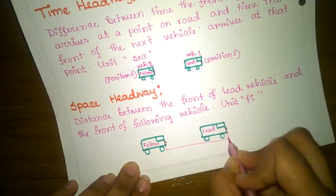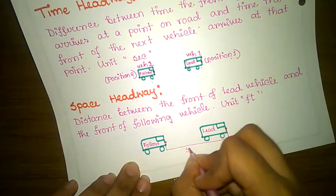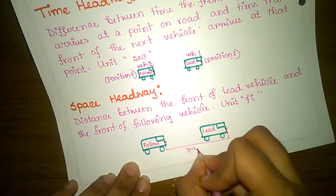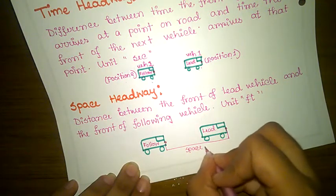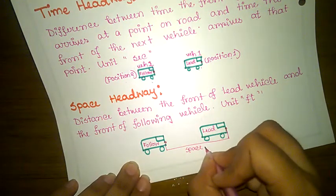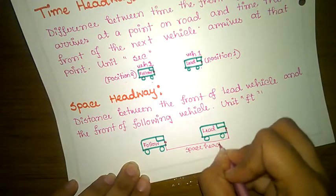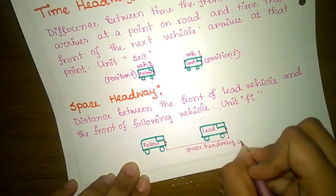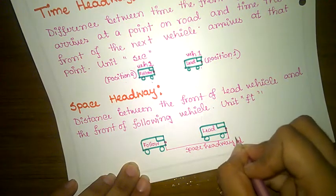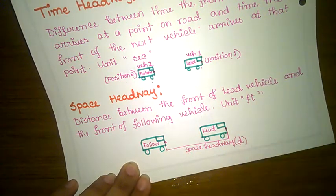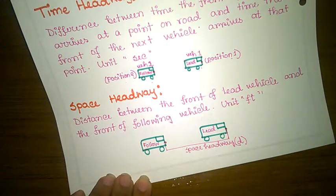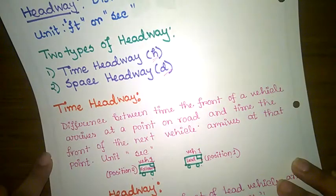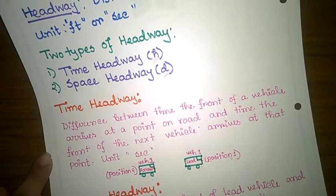In this diagram, we can see space headway and time headway. There is a fixed location marked on the road, and the distance between vehicles is shown as space headway. Time headway is measured by observing the fixed location over time.